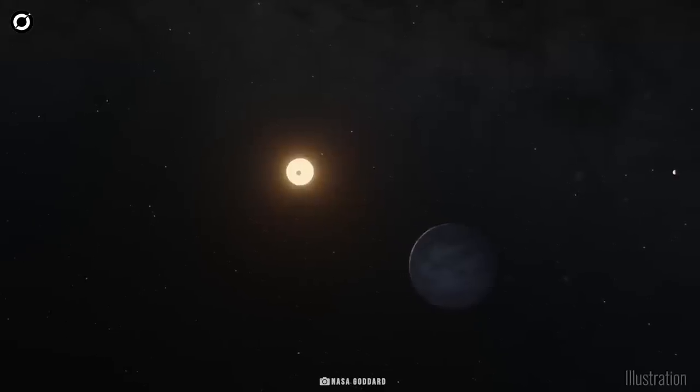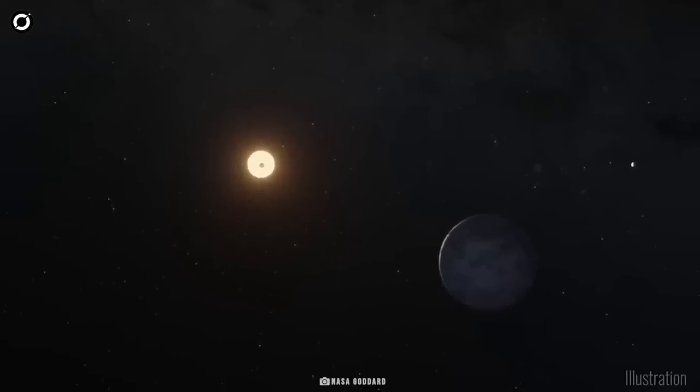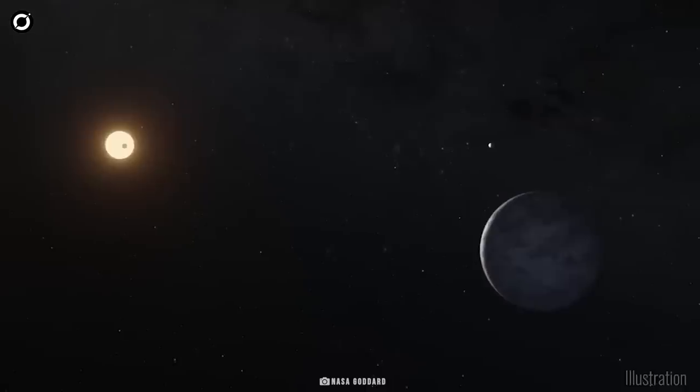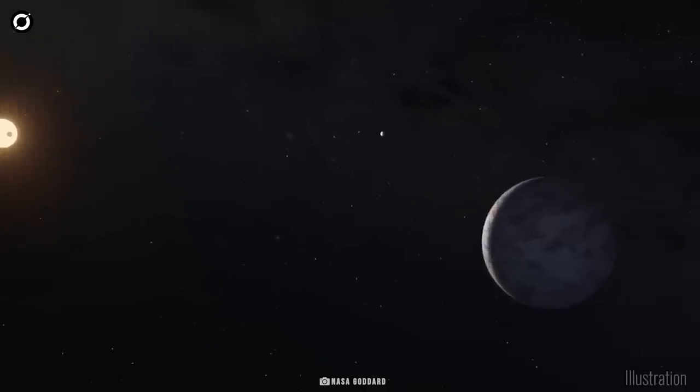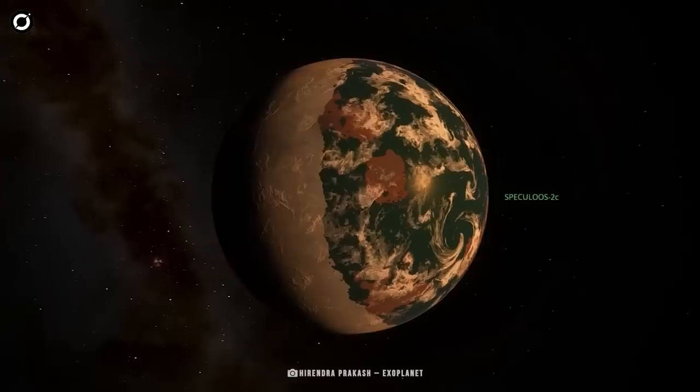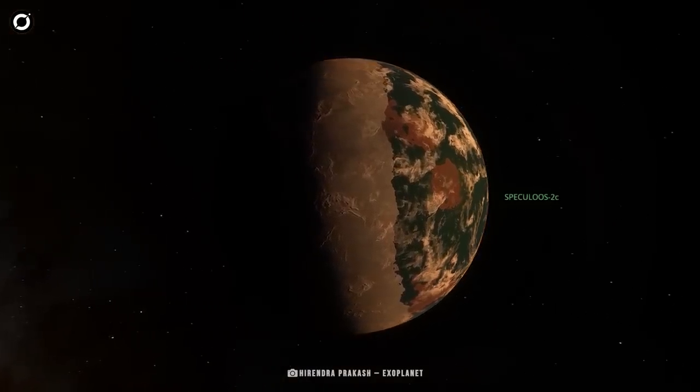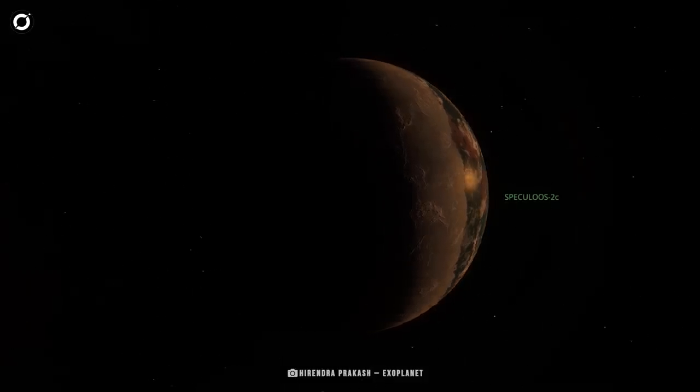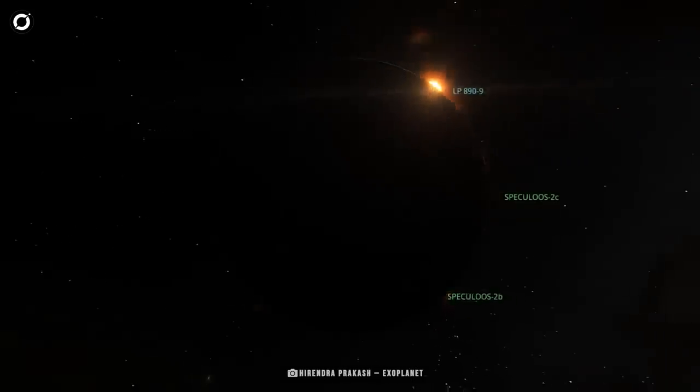SPECULOOS-1c, also called SPECULOOS-1c, is one of the most habitable exoplanets ever discovered as per our studies. The planet orbits a red dwarf star that's around 100 light years from Earth in the constellation Eridanus.